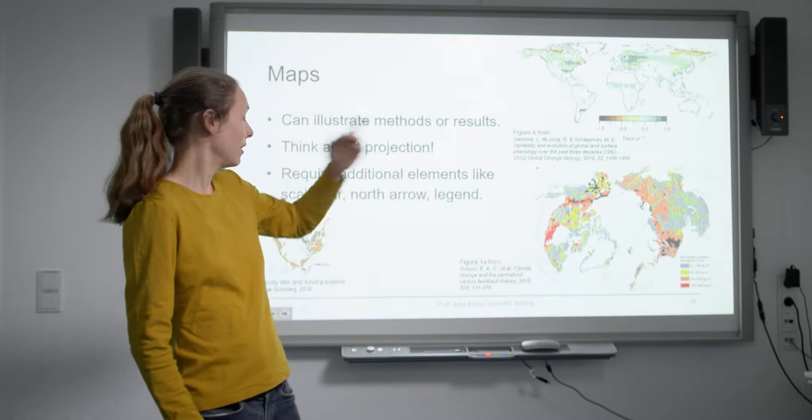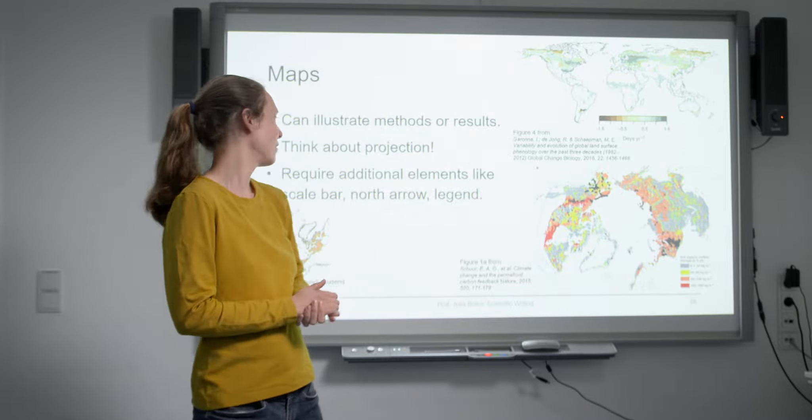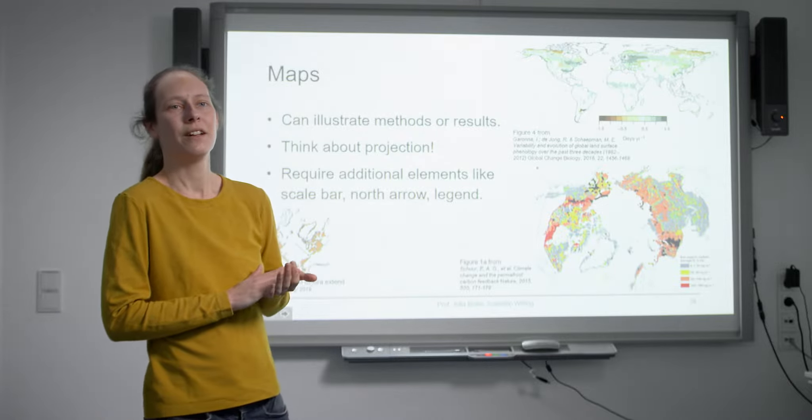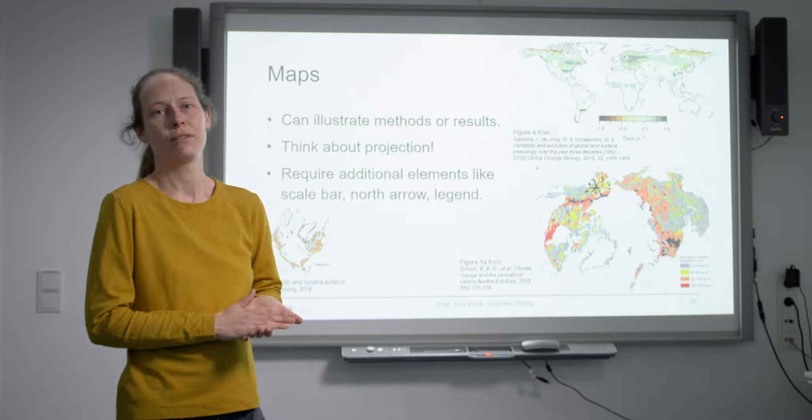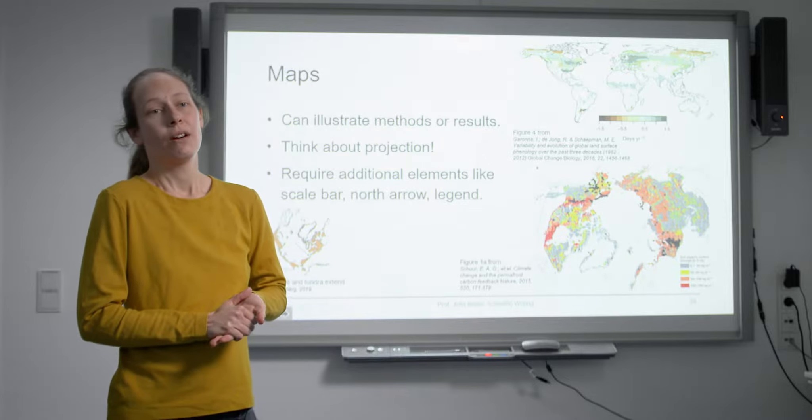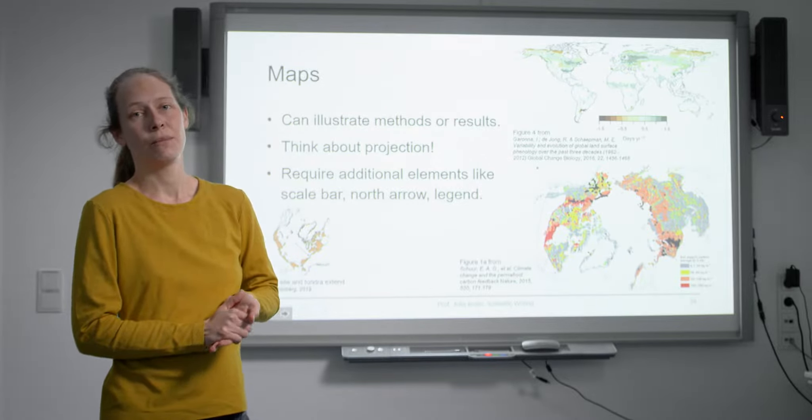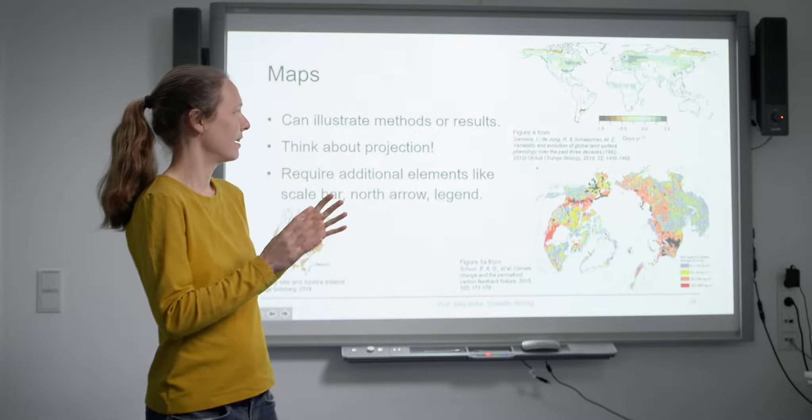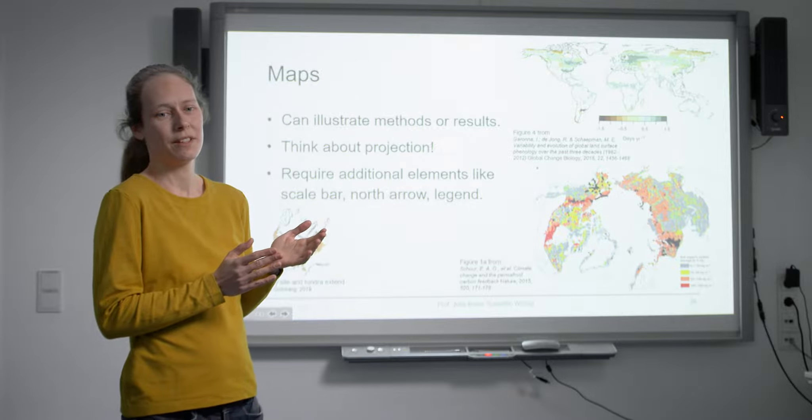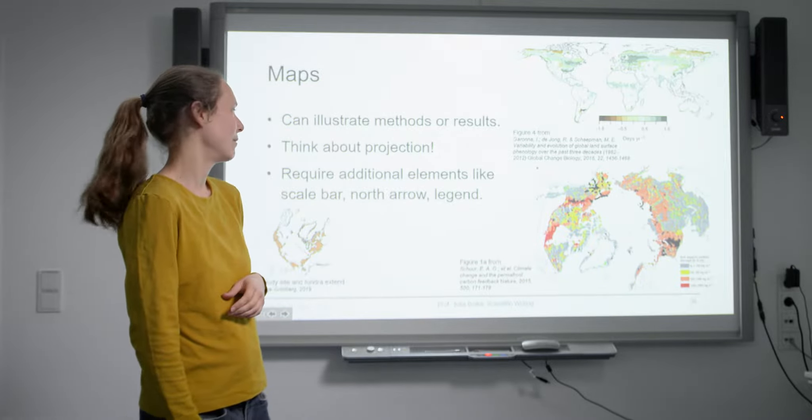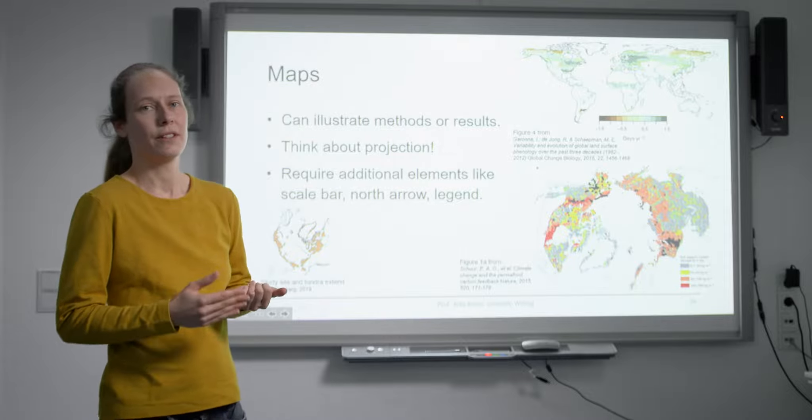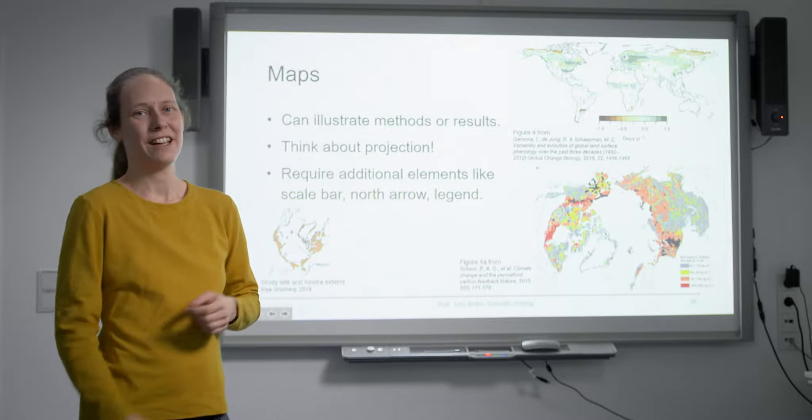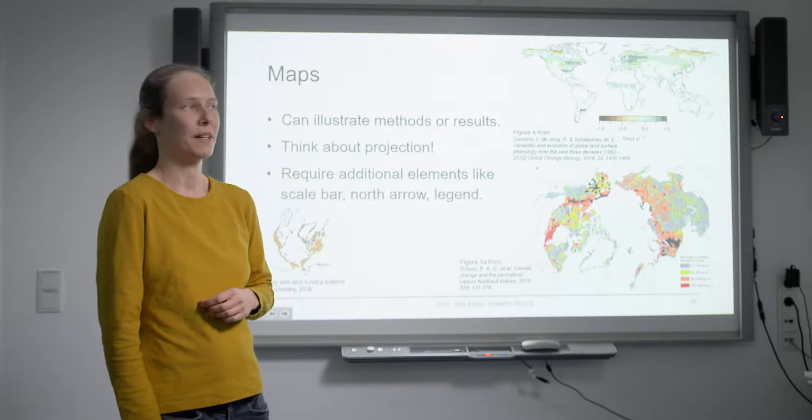Projection and color are important, but also maps often have additional elements, for example a legend. Both of these maps have a legend. Often unless it's a global map, you will often have a north arrow or a scale, which is usually very good except for global maps because there a scale is impossible because it's differently scaled in different areas.